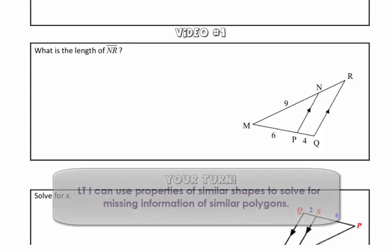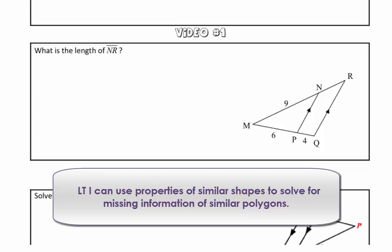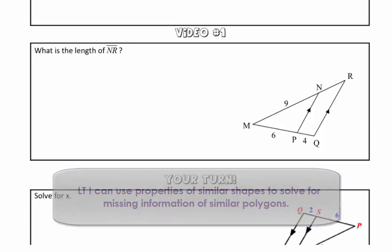Hi everyone, this is Mrs. Nocella, and by the end of this video, you should be able to use properties of similar shapes to solve for missing information of similar polygons.